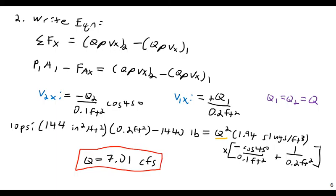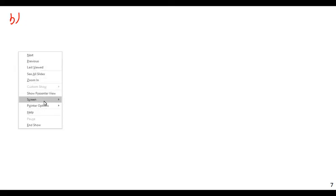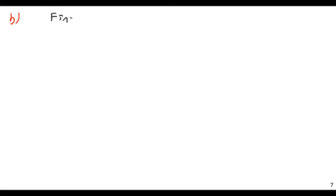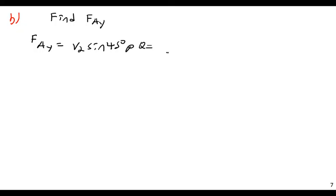Now find F_Ay, the vertical anchoring force. At point 1 the pipe is perfectly horizontal, so the vertical component there is zero. Using the y-direction momentum balance: F_Ay = V₂ × sin(45°) × ρ × Q = (Q ÷ A₂) × sin(45°) × ρ × Q = Q² ÷ A₂ × sin(45°) × ρ.